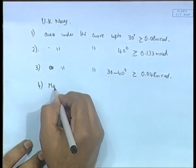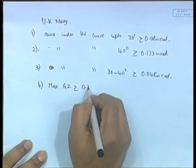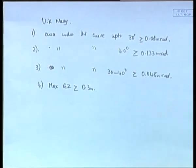The fourth rule is that maximum GZ should be ≥ 0.3 metres. These are rules for the UK Navy for conventional crafts — vessels of larger dimensions, roughly from 30 metres up to about 200–250 metres. There are slight differences between the rules of the IMO, the US Navy, the UK Navy, and the German Navy. These vessels should have their maximum GZ definitely greater than 0.3 metres.